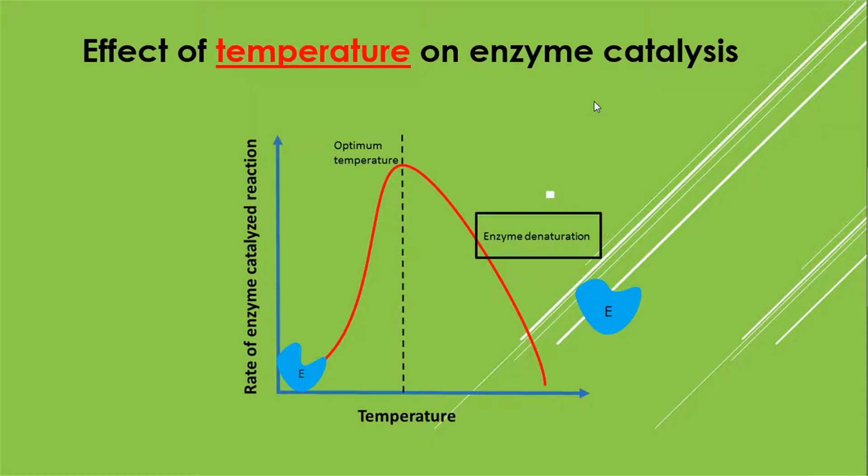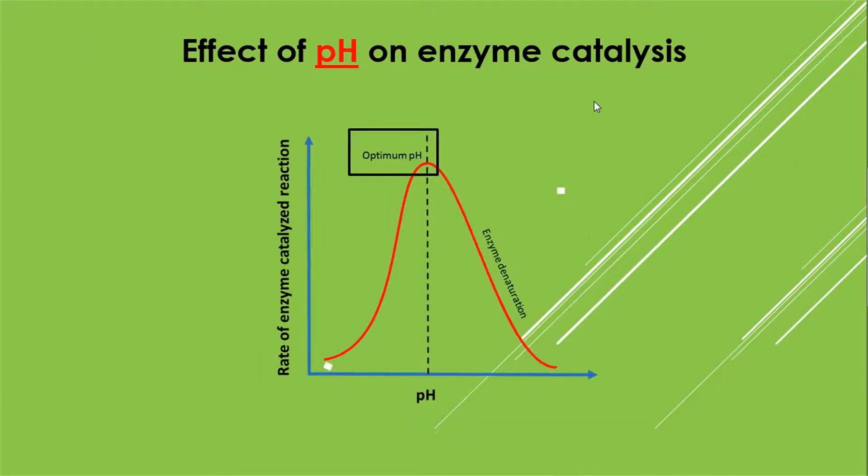Denaturation of enzyme reduces the conversion of substrate into products and thus affects the rate of an enzyme catalyzed reaction. Second factor that affects enzyme catalysis is pH.